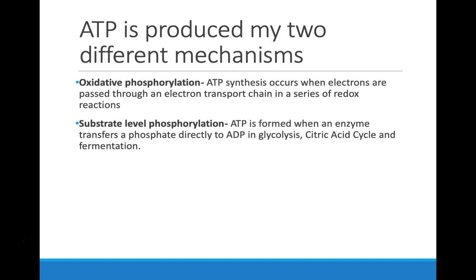The other mechanism is called substrate-level phosphorylation. The word substrate refers to what an enzyme works on — so substrate-level phosphorylation is when an enzyme transfers a phosphate to ADP to produce ATP. This happens in two of the steps of cellular respiration and also in fermentation. Substrate-level phosphorylation produces a lot less ATP than oxidative phosphorylation, but together they produce the ATP used in the cell.